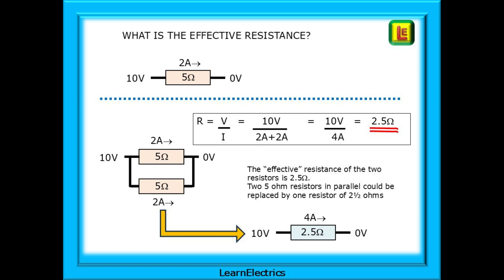If we put two 5 ohm resistors in parallel this time, that is, side by side, each resistor will have 2 amps flowing through it. What is the effective resistance of these two parallel resistors? In other words, what single resistor value can replace the two resistors in parallel? We know that each resistor has a current flow of 2 amps, so two resistors in parallel is 2 plus 2, which is 4 amps. From Ohm's law, we know the voltage divided by current is ohms, so 10 volts divided by 4 amps gives us an effective resistance of 2.5 ohms. In this example, two 5 ohm resistors in parallel could be replaced by just one resistor of 2.5 ohms.